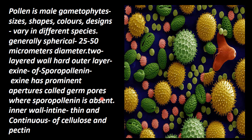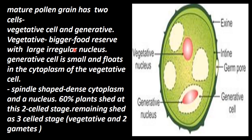In the exine, where sporopollenin is absent, there is a small pore called the germ pore. The inner wall is the intine; it is thin and continuous, made of cellulose and pectin.